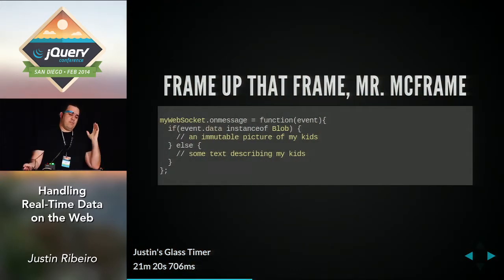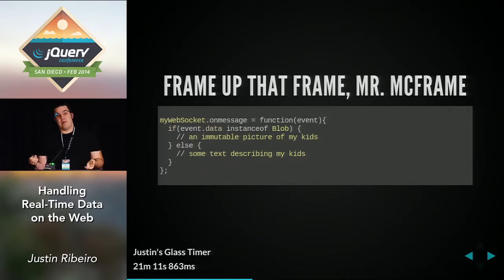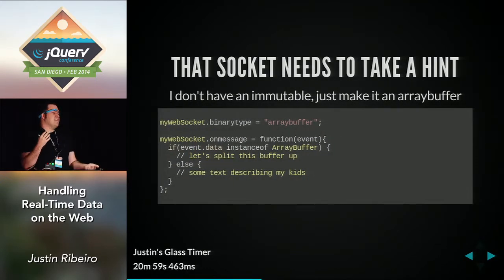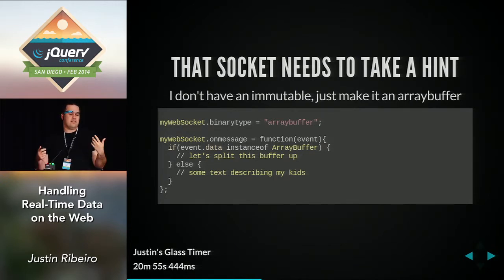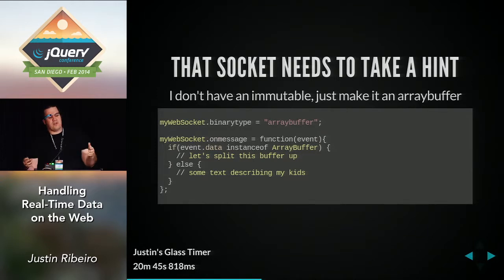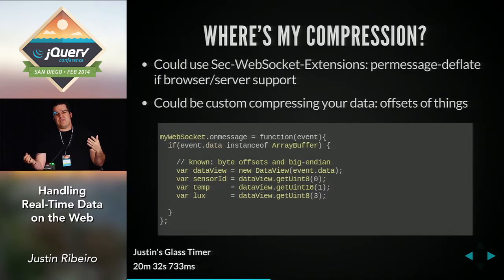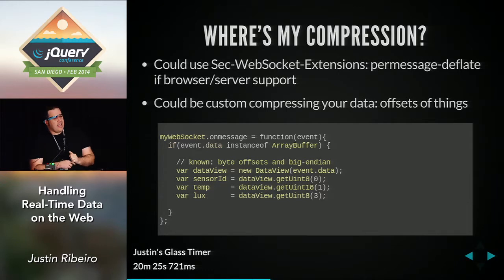You have to frame up your message. An onMessage can consist of binary or text data — you can check if your event data is an instance of a Blob, like an immutable object such as an image or video. You can also force the binary type to be an ArrayBuffer so the browser takes care of things for you, then check for ArrayBuffer instead. So you've got binary frames implemented — great, you're saving bandwidth — but then your event data is an ArrayBuffer and you have to figure out how to process it.